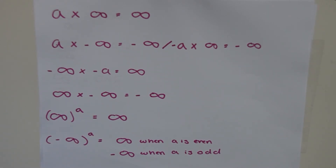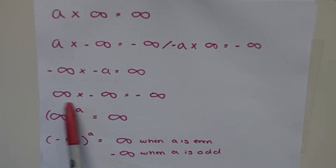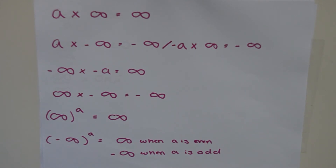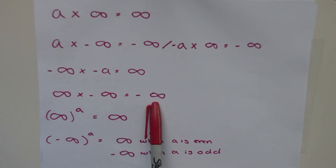Our next case: positive infinity multiplied by negative infinity. Here we're actually multiplying two infinities — it's like infinity squared. Infinity is such a large number that multiplying two of them together gives an even larger result we can define as infinity. The negative sign makes the entire equation come out to negative infinity.